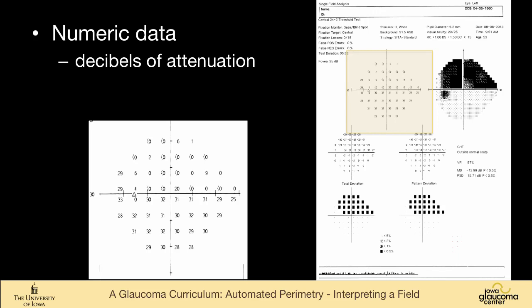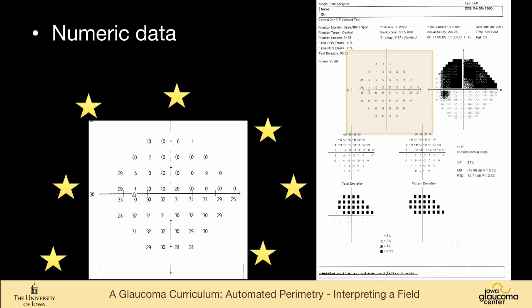Then here we can see the numeric data, and this is decibels of attenuation. So you have a very bright light, 10,000 apostilbs, and how far can you attenuate that light and still see it? And so you can see here that this point can see the unattenuated light. This point can't even see that. So this point is blind to the brightest light of the perimeter. At this point, the light can be attenuated by 30 decibels, roughly three log units, and the patient can still see it. So that's what these numbers mean. These numbers are the truth in the visual field. This is what's measured, and everything else is somewhat digested. So whenever you're confused or concerned, you should come back to the numeric data.